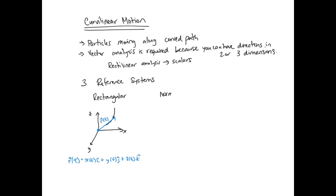The next coordinate system we'll look at is normal and tangential. For this coordinate system, the origin is actually on the particle which is moving along the path. The normal direction is the direction towards the center of curvature of that path, and your tangential direction is moving tangential to the path of motion — so n goes towards the center and t goes tangentially along the path.